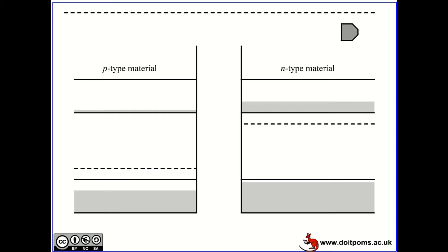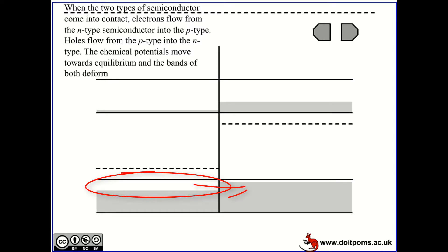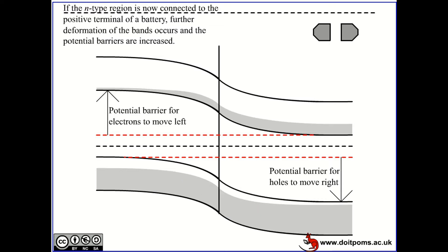Here you've got your P-type and N-type material which you bring together. When you first bring them together, the electrons in the conduction band diffuse over to the P-region, and holes in the valence band of the P-region start to diffuse through to the N-type region. Once this happens, you reach equilibrium because the diffusion stops — a few electrons have moved over making the P-type region near the interface negatively charged, and a few holes have diffused the other way making the N-type side slightly positively charged, so they start to repel further movement and you end up with a potential barrier.